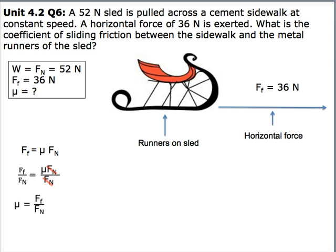When you do this, you're left with the coefficient of friction equals Ff over Fn. In the boxes above, we're given the values of Ff, which is 36, and Fn, which is 52. So you can plug in those values in replacement for the variables.